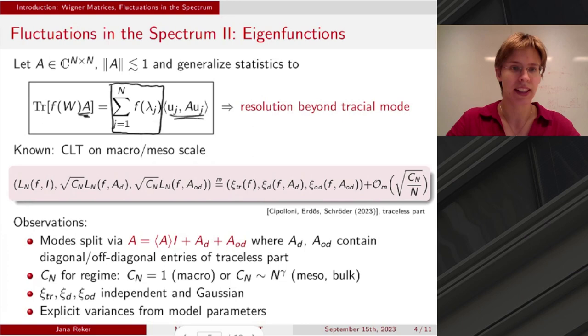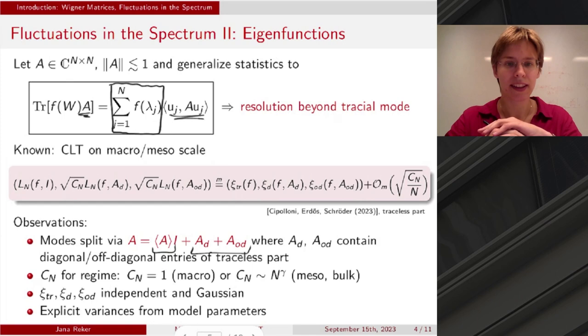And the CLT that they have in the paper now looks like this. So this LN is just the statistics centered. And this is asymptotically Gaussian in the sense of moments. The reason that we're looking at three different parts here is they have observed that if the matrix A is chopped up into three different parts, you actually obtain three different independent modes in the limit. And then there's also the scaling factor CN. If you're looking at the macroscopic regime, meaning all of the functions are N-independent, then those CNs are just order one. So everything fluctuates on the same scale. However, if one looks into the mesoscopic scale, those factors actually become N-dependent, which shows that the modes corresponding to this tracial part and the modes corresponding to this traceless part actually fluctuate on different scales. And you can actually see the role of the traceless matrices in here. I also remind that they obtained explicit variances. However, I will not go into detail here.